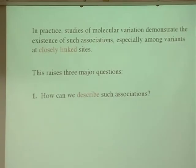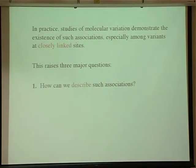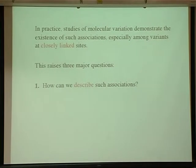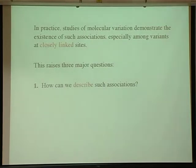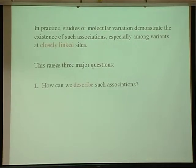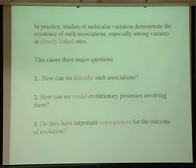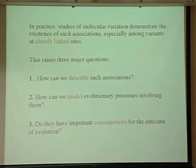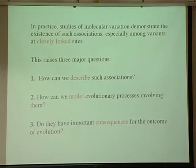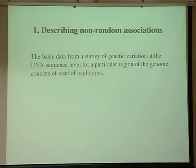This raises three major questions. First, we need to be able to describe associations between variants of different sites—we can't do anything sensible unless we have a way of describing what we're talking about. Then we need to be able to make models of evolutionary processes that involve our descriptors of the states of variance in populations. And then we want to ask whether they have important consequences for the outcome of evolution. Let's talk about describing non-random association between variants of different sites.